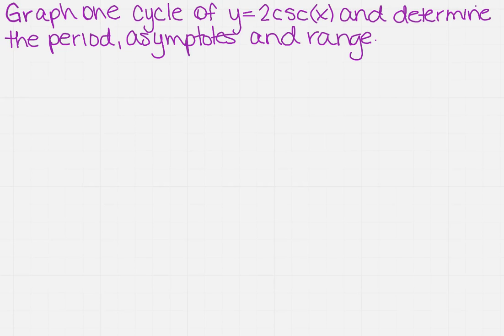We want to graph one cycle of y equals 2 cosecant of x and determine the period, asymptotes, and range.